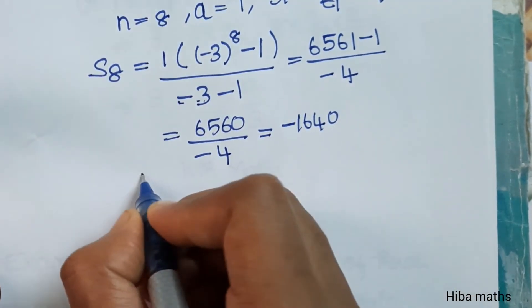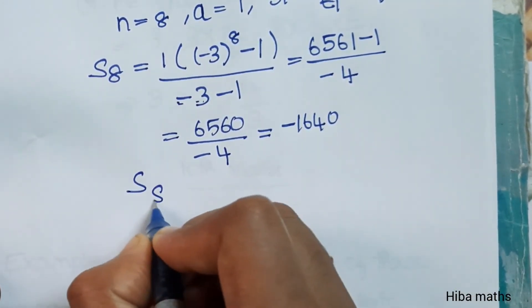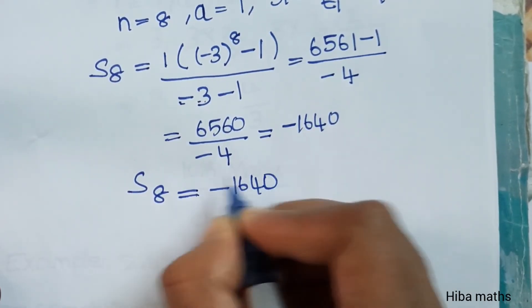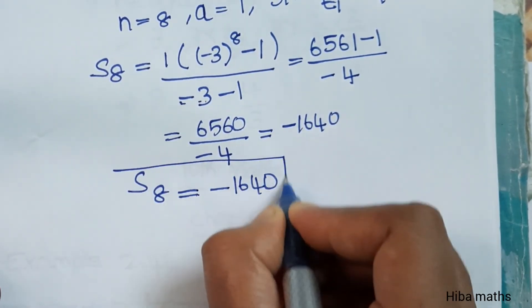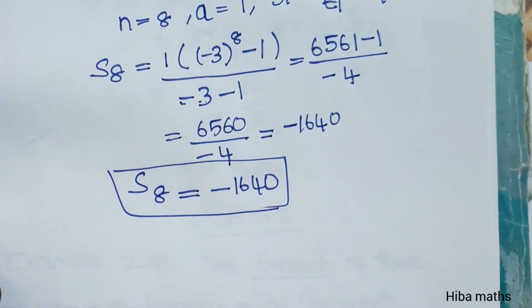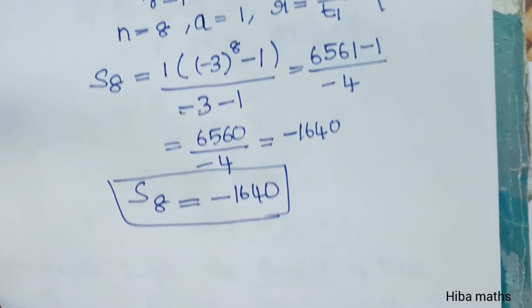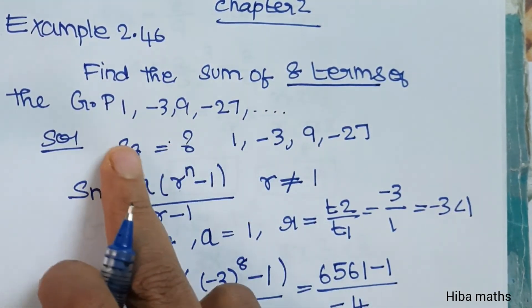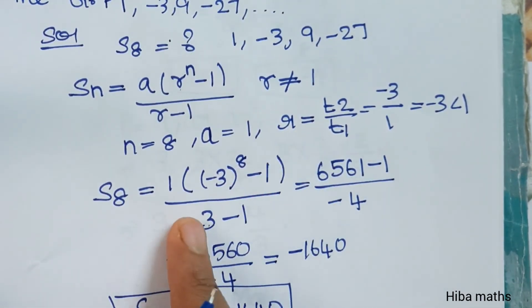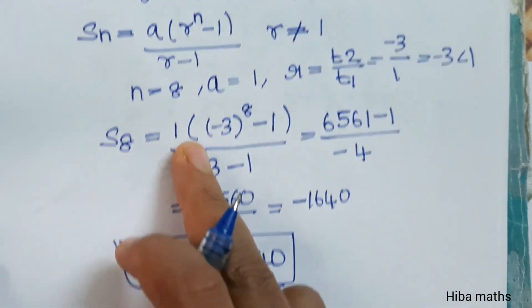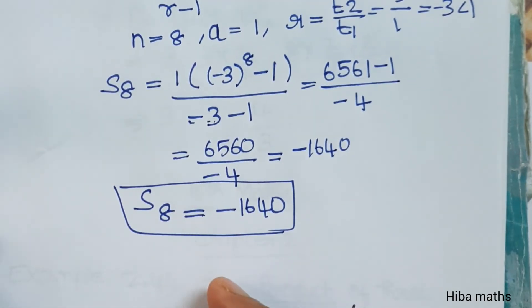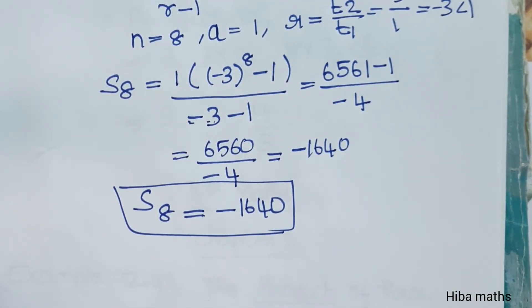So the value of S of 8 is minus 1640. You can understand this question very easily. Thank you so much for watching.